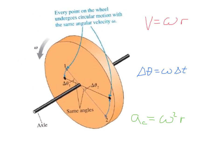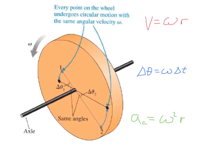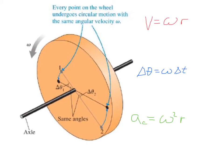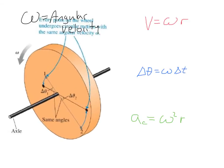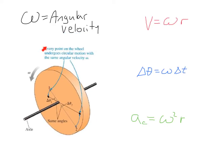Here we have a rotating object — it's a wheel on an axle. As this wheel rotates, for any time interval, the two points on the wheel turn through the same angle, even though their distance from the axis of rotation is different. The result is that the two points have equal angular velocities. The symbol for angular velocity is the Greek letter omega. Every point on the wheel undergoes circular motion with the same angular velocity.